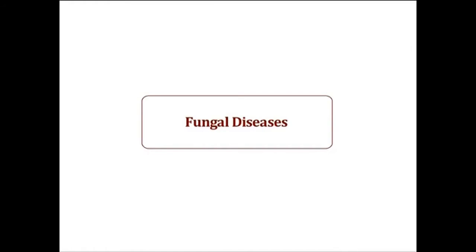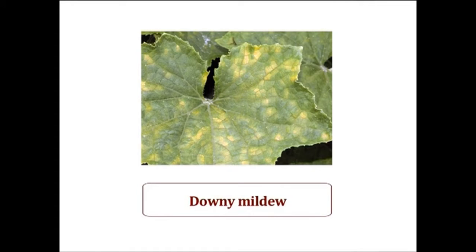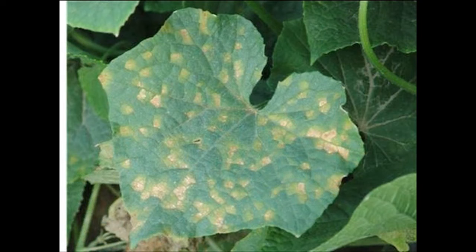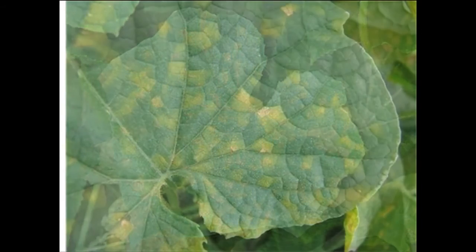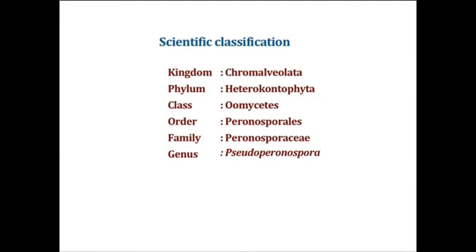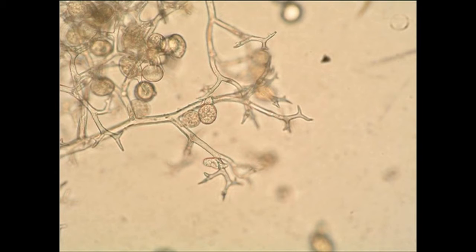The first fungal disease of cucurbits is downy mildew. The disease-causing pathogen shows pale green to yellow angular spots restricted by leaf veins on the leaves. Scientific classification: Kingdom Chromalveolata, Phylum Heterokontophyta, Class Oomycetes, Order Peronosporales, Family Peronosporaceae, Genus Pseudoperonospora. The mycelium is hyaline, aseptate, and intercellular. Sporangiophores develop in groups of 1 to 5. Sporangia germinate by producing zoospores. Oospores are produced rarely and are spherical.